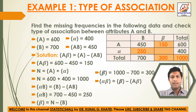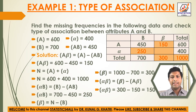Now alpha_beta is equal to Alpha minus alpha_B, which is 300 minus 150, giving alpha_beta equal to 150.